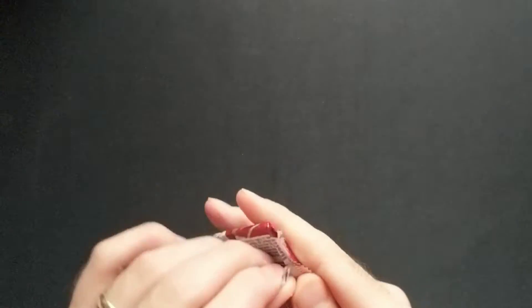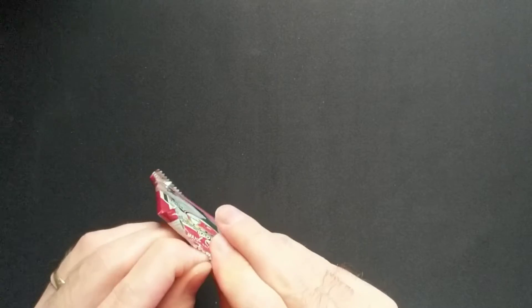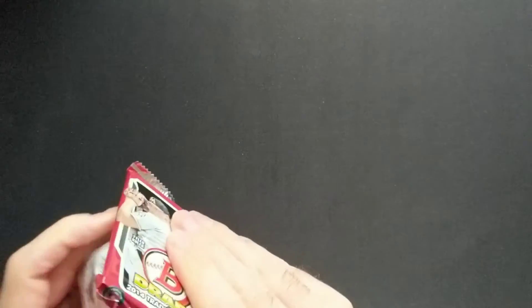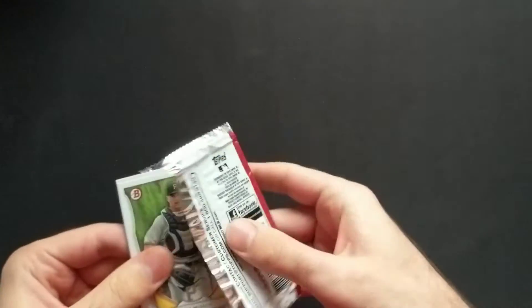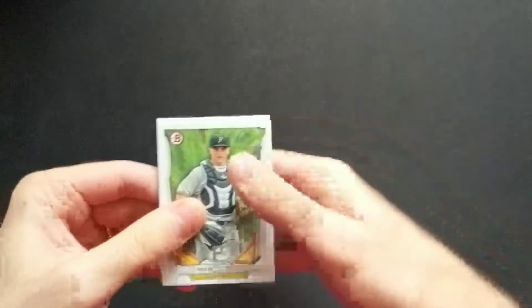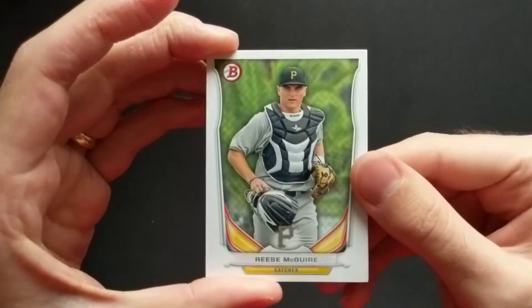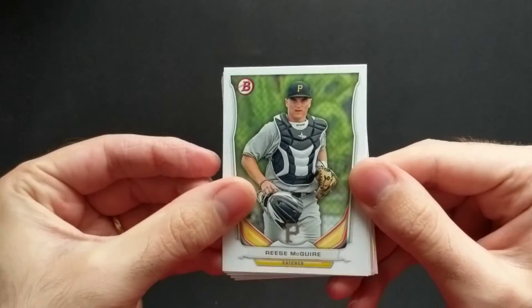Let's see what we can find. Some very nice Bowman firsts. Let's see what our chromes end up being. Yeah, so Reese Maguire, obviously now with the Blue Jays.